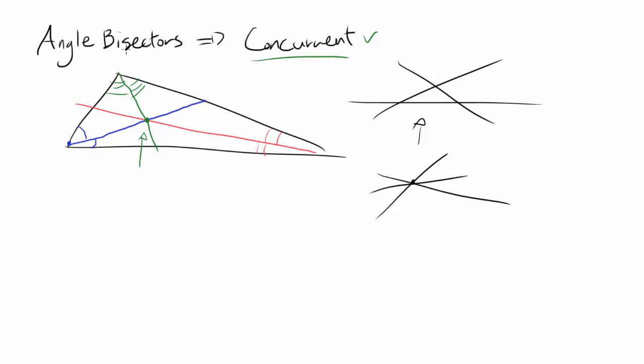So the question is, do angle bisectors of a triangle always intersect at the same point? And it turns out the answer is yes, and we are going to prove it.